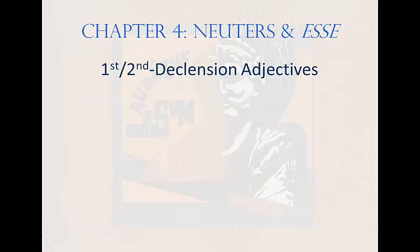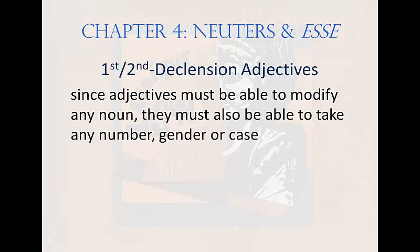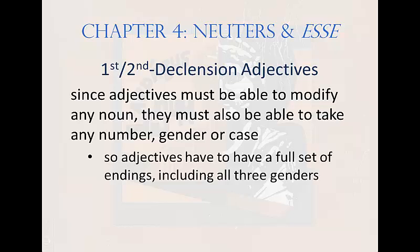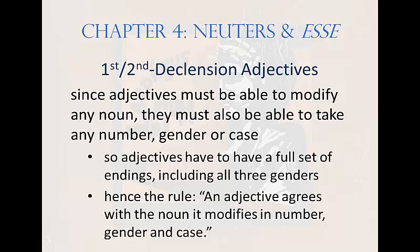Now let's address adjectives. Adjectives utilize first and second declension endings to create one declensional system called first-second declension. Since adjectives must be able to modify any noun, they must also be able to take any number, gender, or case. So adjectives need a full set of first and second declension endings to be masculine, feminine, or neuter, singular or plural, in any case. In Latin grammar, nouns take precedence over adjectives — hence the rule that an adjective must agree with the noun it modifies in number, gender, and case.